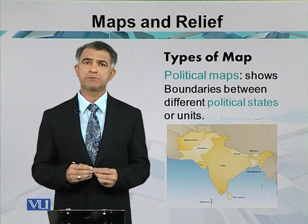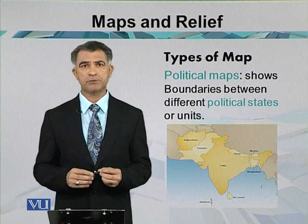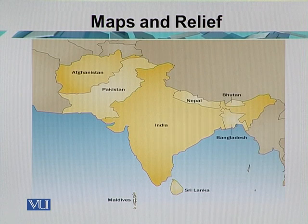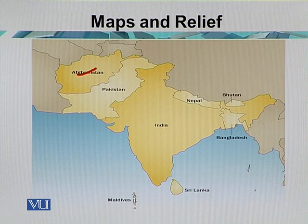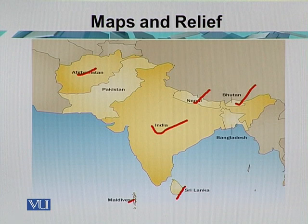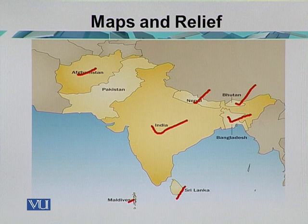Here we have our best example of the South Asian region. In South Asia we have eight major countries: Afghanistan, Pakistan, Maldives, and Sri Lanka Islands to the south. The central part is covered with India. The northern part has Nepal and Bhutan, and the eastern side is covered with Bangladesh. Each country has its own political boundary, which is why political maps are very important.